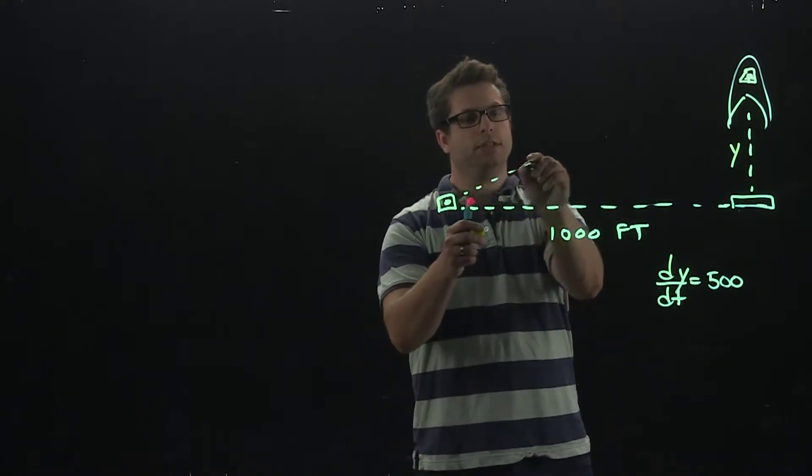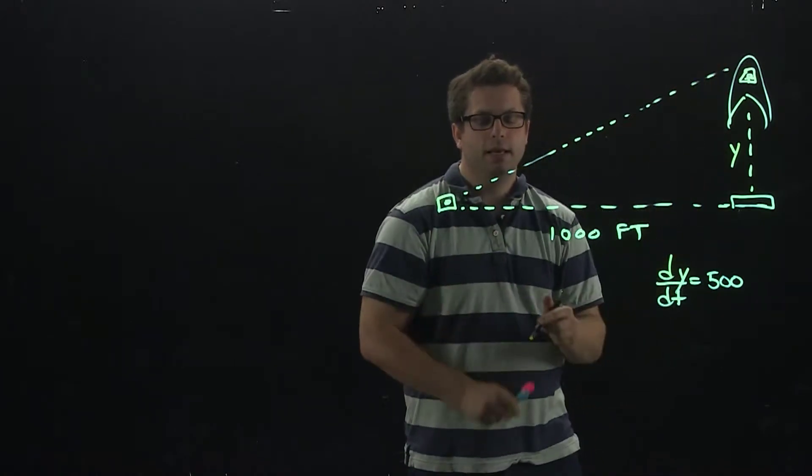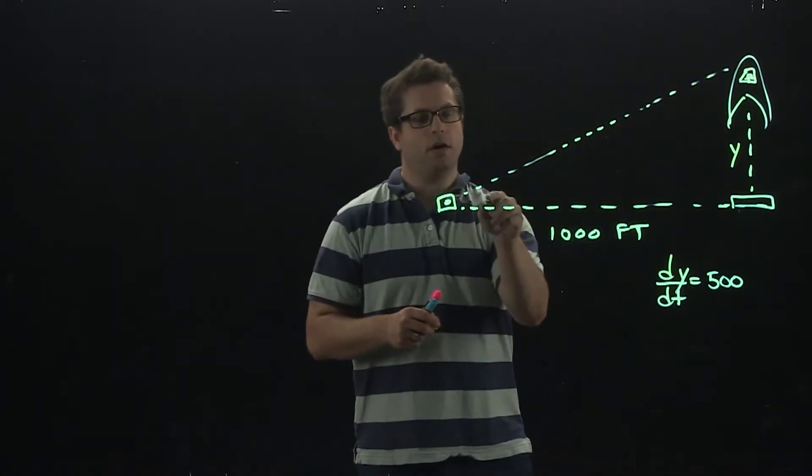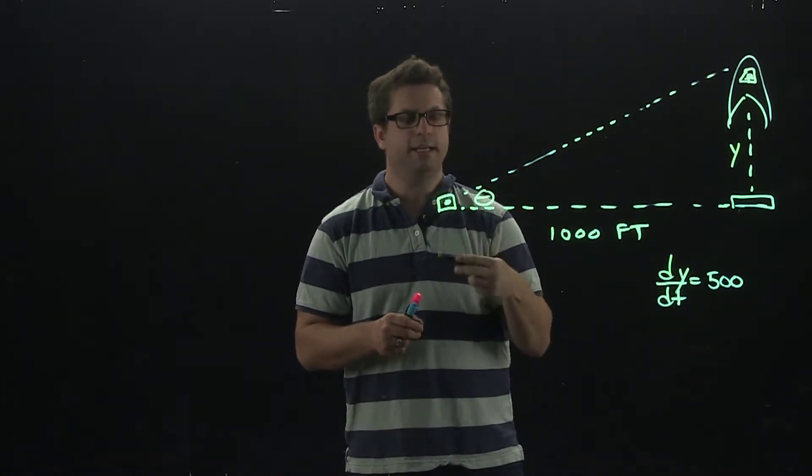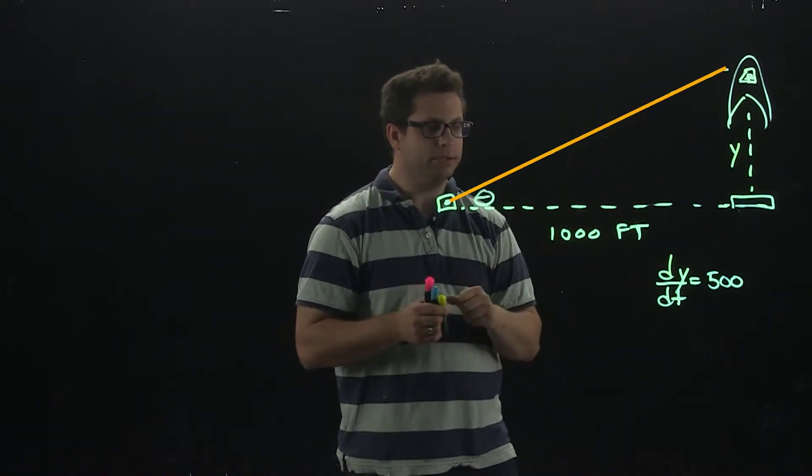In part A, I wanted to know how fast is this line increasing as the rocket goes up. In this video, we are talking about theta. How fast is this angle increasing as the rocket ship goes up?